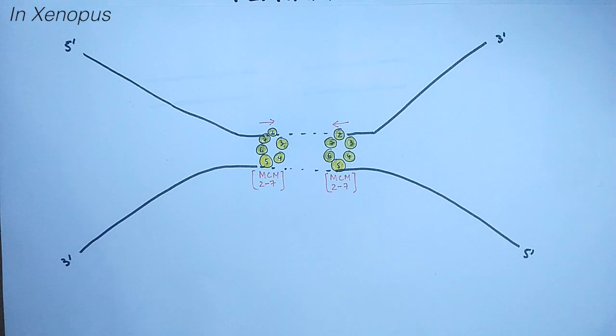Now in this diagram we have shown the two helicases, two MCM complexes approaching each other. Because in eukaryotes we have different origin sites, we have lots of origin sites while the replication begins. That's why there are numerous MCM complexes replicating the DNA molecule.